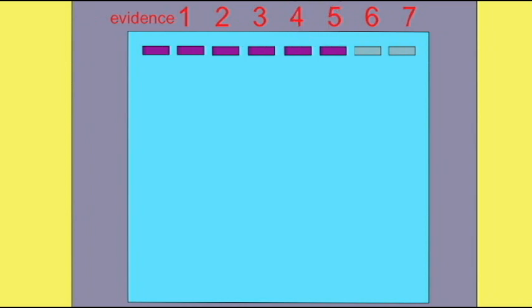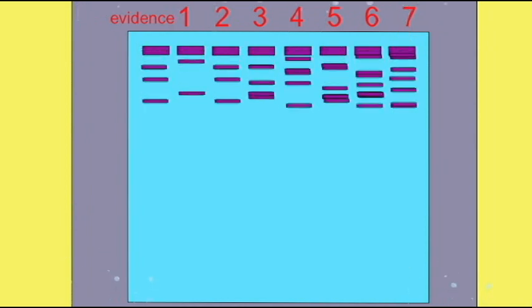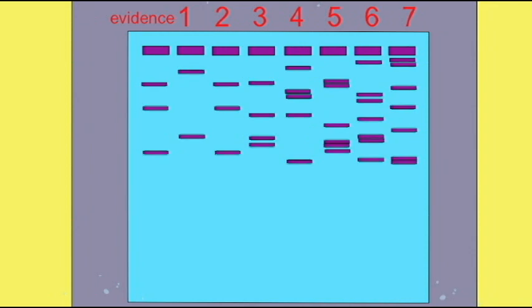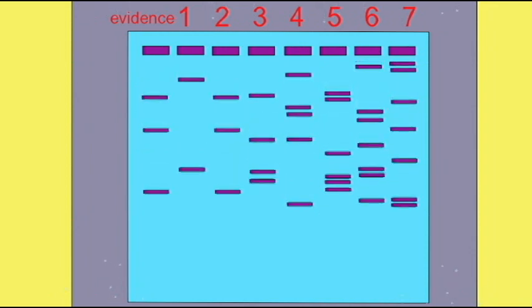And while it may show a link to a specific individual, it does not necessarily show that this individual committed a crime. It simply shows that their cells were at the crime scene.